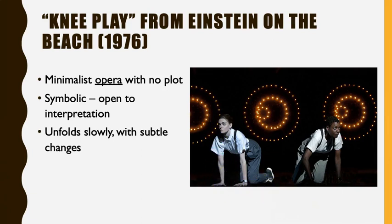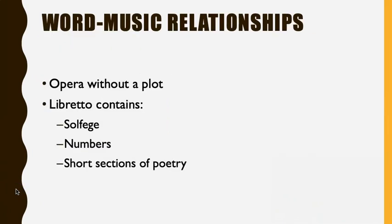As you listen, one thing you'll probably notice right away is the words. This is an opera without a plot, but it does still have a libretto — the text that the singers are actually singing. In this excerpt called Knee Play, there are three different kinds of singing, each nonsensical. Two soloists and a choir are accompanied by an organ. The organ plays the same three chords over and over and over again, never changing. On top of that, the chorus is singing both solfege and counting.